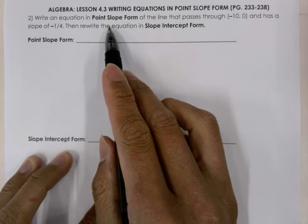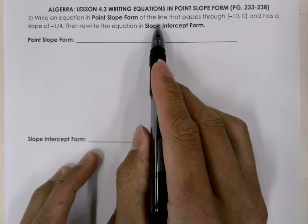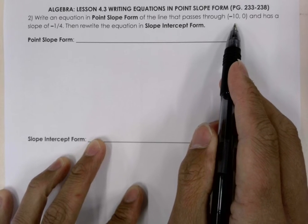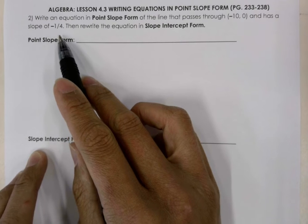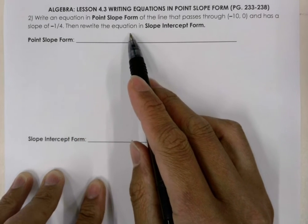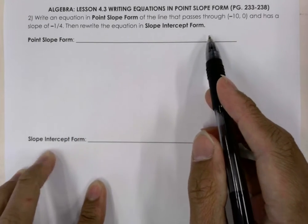Write an equation in point-slope form of the line that passes through negative 10, 0 and has a slope of negative 1 fourth. Then rewrite the equation in slope-intercept form.